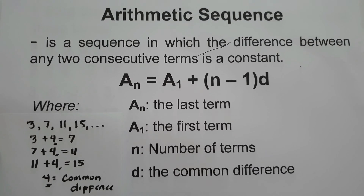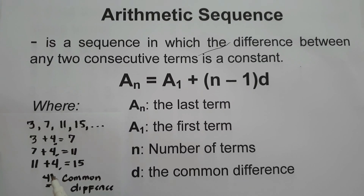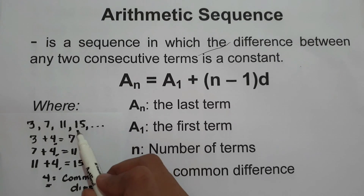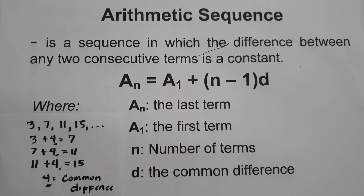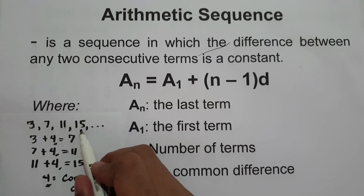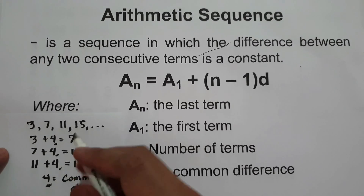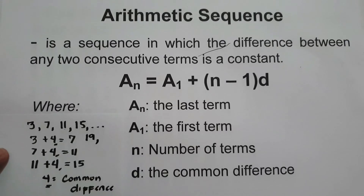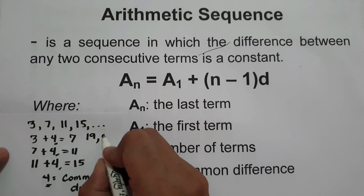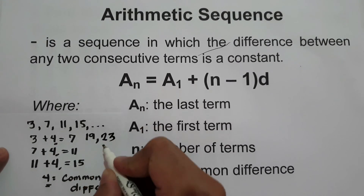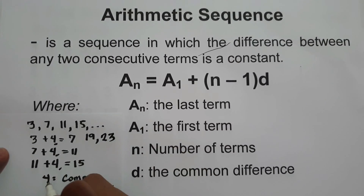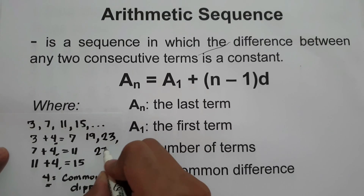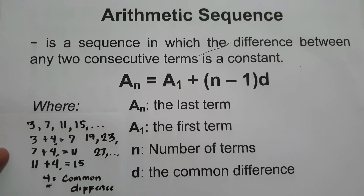In order for us to find the next three terms, we simply add the common difference to the last term. So the next term after 15 is 15 plus 4, which is 19. Then 19 plus 4 is 23, and 23 plus 4 is 27. That's how you find the next three terms.